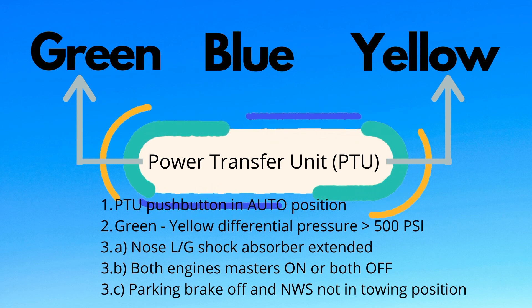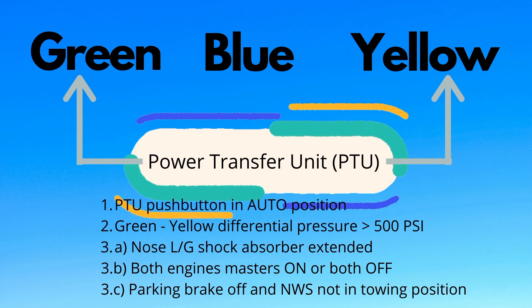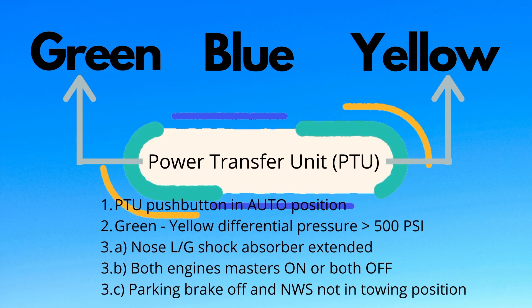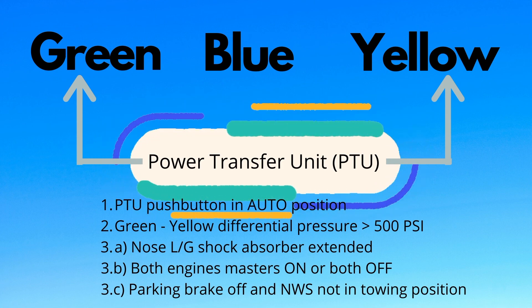The nose landing gear shock absorbers are extended, meaning that the aircraft is airborne. Both engine masters are on or both are off, and the parking brake and nose wheel steering is not in the towing position. The PTU also runs in a self-test mode after the second engine is started.